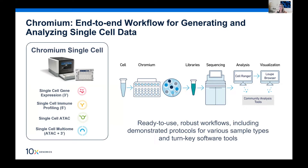Before we dive into the capabilities of the immune profiling assay, let's take a couple of steps back and look at the chromium single cell platform as a whole. What you can see here is the chromium instrument — the chromium controller — which is fairly small, like the size of a shoe box. We also now have the chromium X, which is slightly larger and enables exactly the same assays. These four core assays provide flexibility around the number of cells you can run. You feed disposable microfluidic chips and load one of these four key assay types. Regardless of your target analyte, the key output from all of these assays is the ability to characterize heterogeneity.